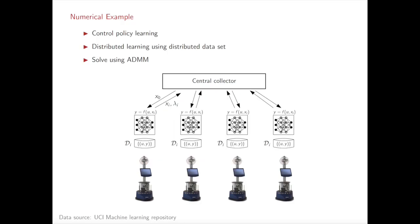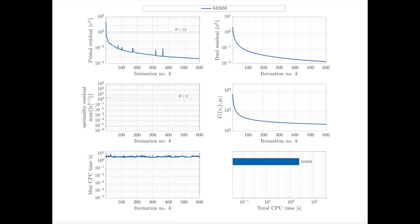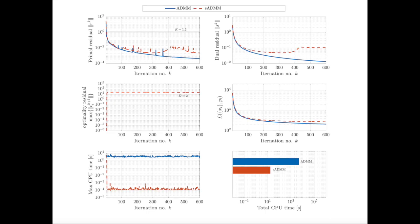We demonstrate this on a distributed learning problem where we want to train a neural network to learn the optimal policy using expert demonstrations, which in this case we assume are obtained from different robots. We first solve this using standard ADMM, which is shown in blue, and we can see that this requires around 5000 seconds of CPU time. Then we solve using our proposed sensitivity-assisted ADMM with only the tangential predictor, which is shown in red, and the CPU time per iteration has now reduced by about five orders of magnitude, and this has resulted in the overall learning problem requiring less than 20 seconds as opposed to 5000 seconds.